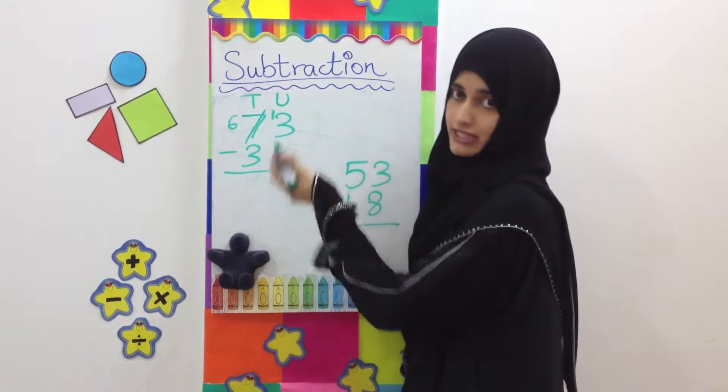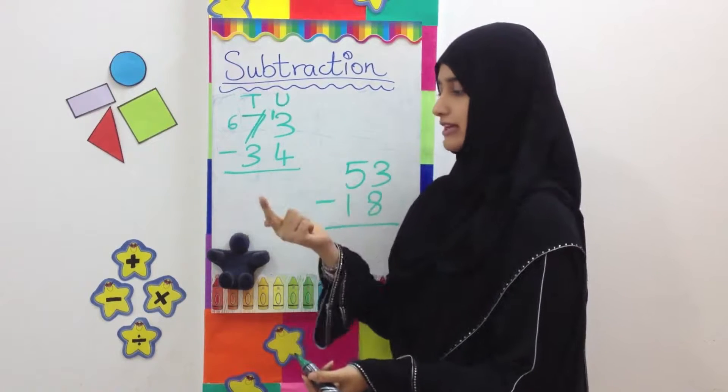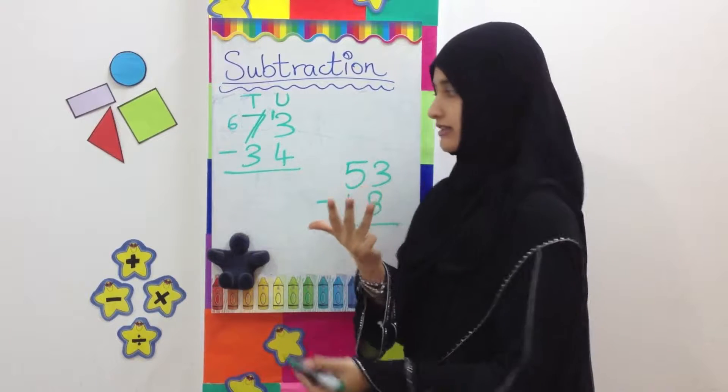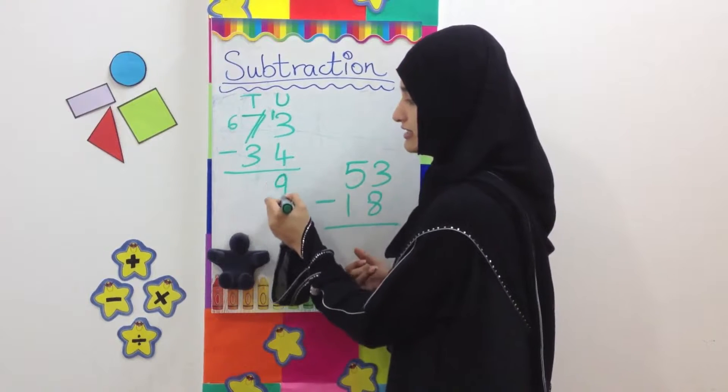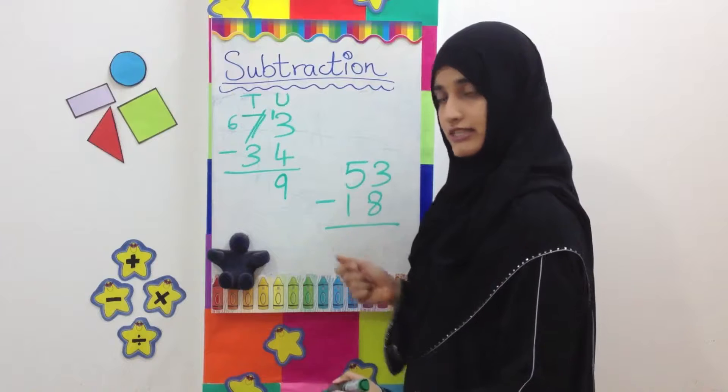13 take away 4. We know 13 minus 4. You can count back. 12, 11, 10, 9. Answer is 9. Write it here. Now the 10 side.